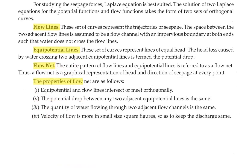Next we are going to see the properties of flow net. First, equipotential and flow lines intersect or meet orthogonally. Second, the potential drop between any two adjacent equipotential lines is the same. Third, the quantity of water flowing through two adjacent flow channels is the same. Fourth, velocity of flow is more in small size square figures so as to keep the discharge same. These are the four properties of flow net.